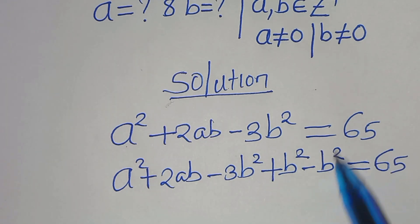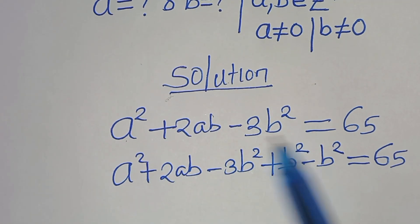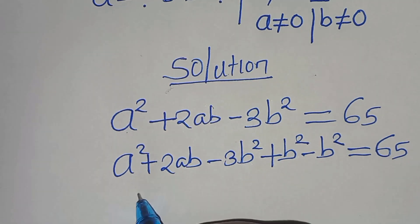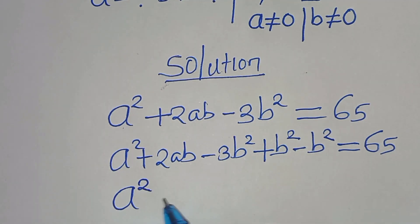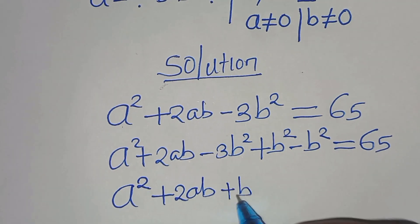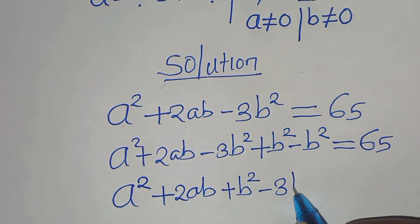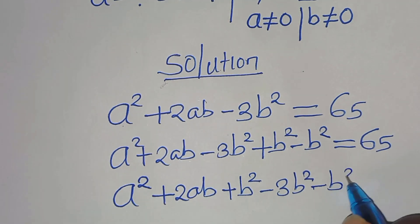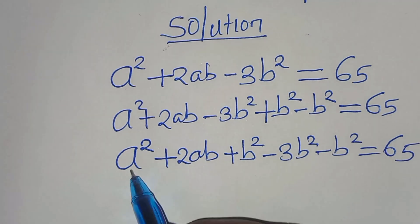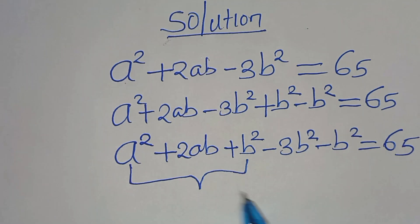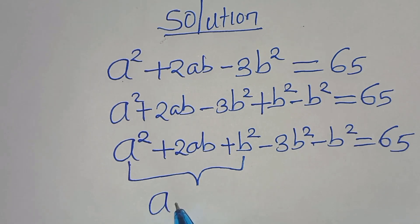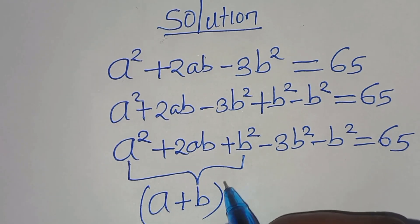By adding b squared minus b squared, we don't alter the arrangement of this equation. So therefore from here, we can form an algebraic expression: a squared plus 2ab plus b squared, which we can express as a plus b raised to the power of 2.